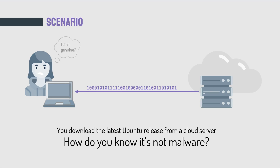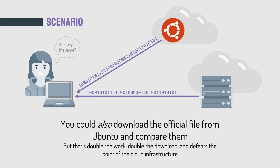Let's start with a scenario. Imagine that you wanted to download the latest release of your favorite operating system. A lot of the speed of the internet today is built around providing files to people locally via cloud servers. So you download the latest release of your OS from your local cloud server, and you might naturally have a question: is this the authentic copy of the operating system? Well, one thing you could do is download the software from the developers themselves and compare the two copies to see if they're equal. Obviously this is not very efficient — you do double the download, spend twice the hard drive real estate, and twice the time.